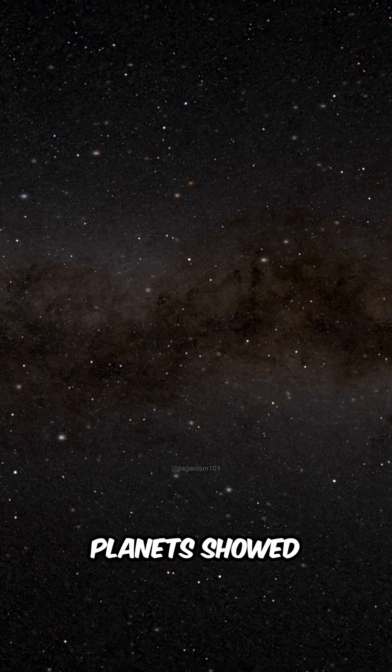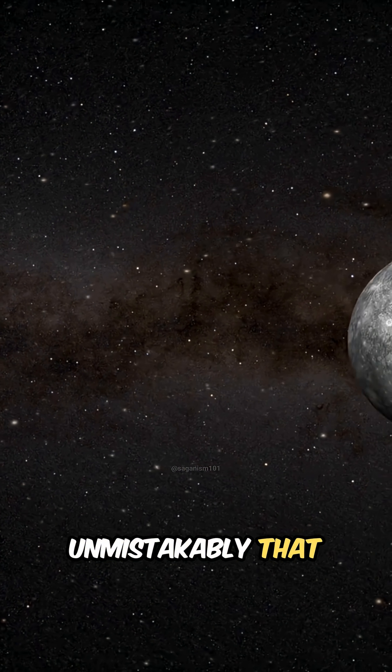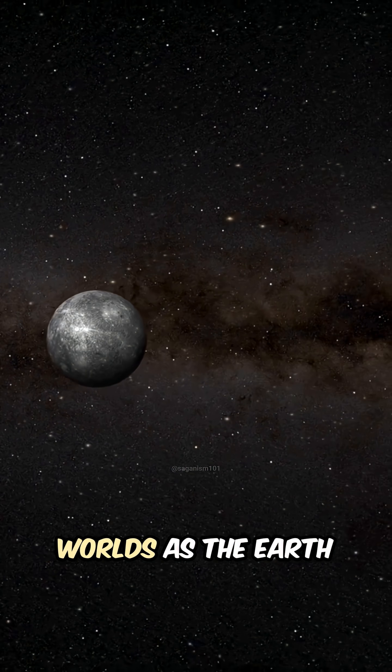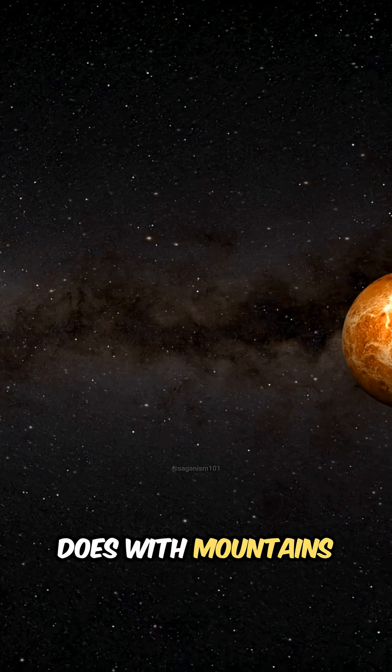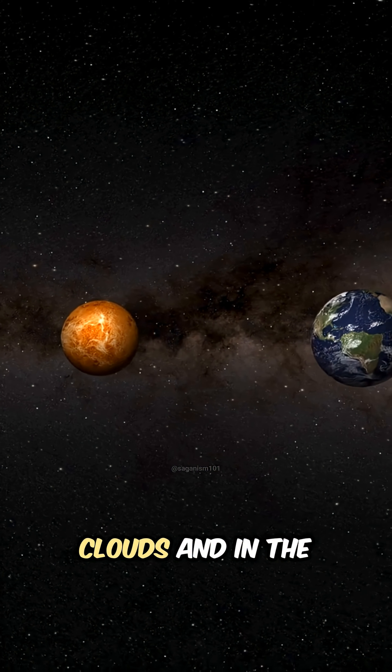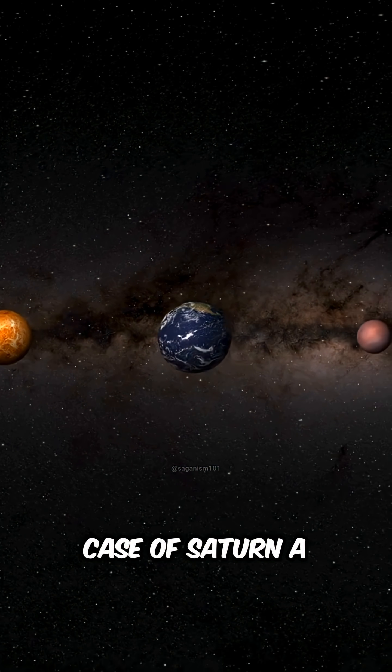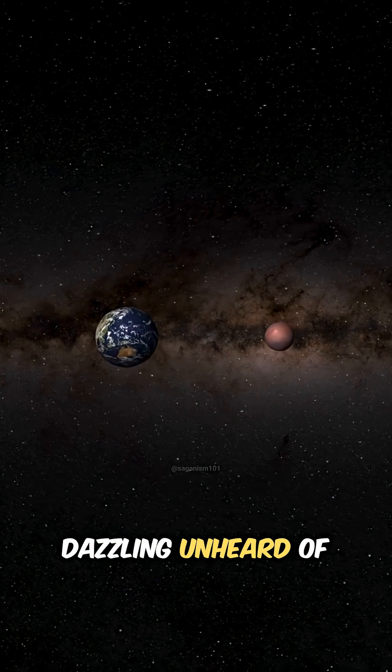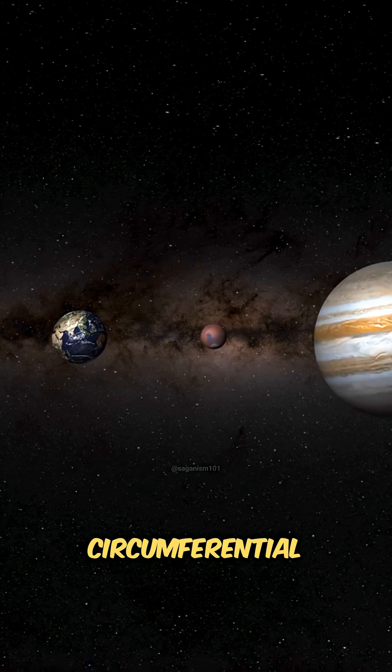The moon and the planets showed unmistakably that they had as much claim to being worlds as the earth does, with mountains, craters, atmospheres, polar ice caps, clouds, and, in the case of Saturn, a dazzling, unheard-of set of circumferential rings.